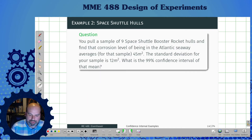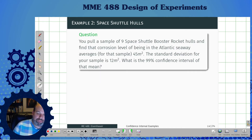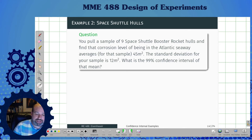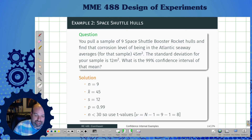Another example: I'm inspecting space shuttle booster rocket hulls. I only have nine of them, so I'm measuring the average corrosion level, which comes out to 45 meters squared, with a sample standard deviation of 12. What's the 99% confidence interval? I extract all the data as before.